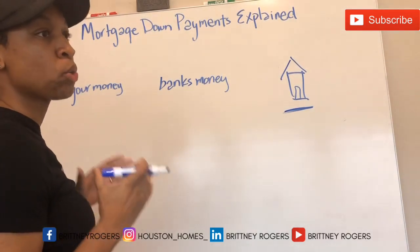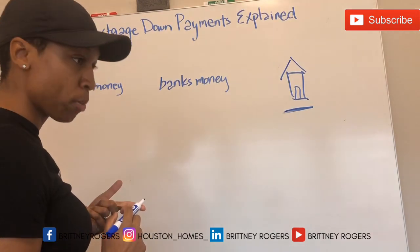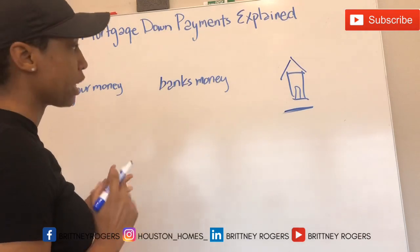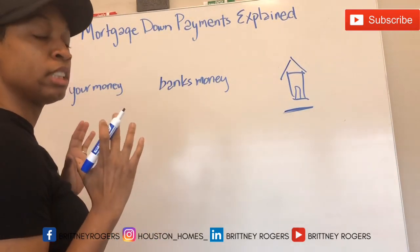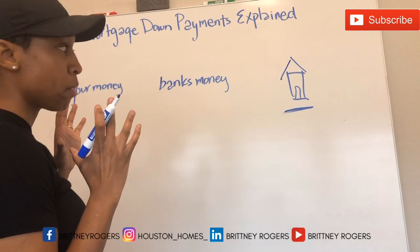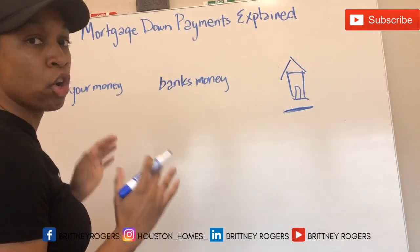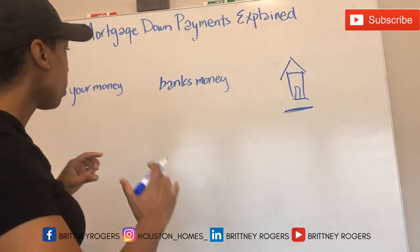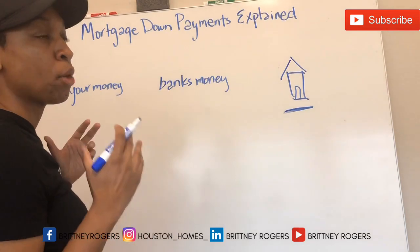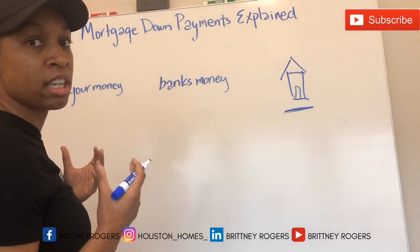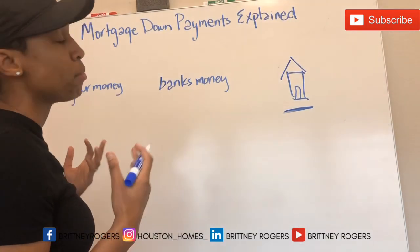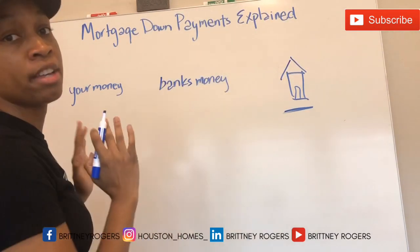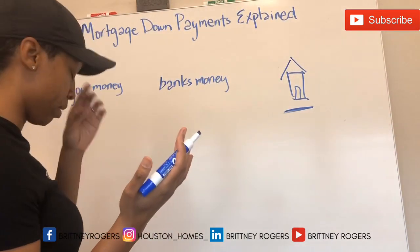The percentage that is required depends upon the loan program you're participating in, the type of loan you're getting, and what sort of property it is. If it is a property that you intend to live in and it's going to be a primary residence, then the down payment on that is going to be less than what it would be if you were purchasing an investment property. That is because primary residences are considered less risky investments for banks because you're living there, and most people will pay for wherever they live before they pay for an investment property they are not living in.